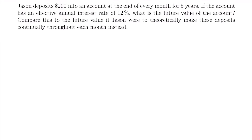Welcome back. Let's start with this example. We have Jason deposits $200 into an account at the end of every month for five years. If the account has an effective annual interest rate of 12%, what is the future value of the account? Compare this to the future value if Jason were to theoretically make these deposits continually throughout each month instead.